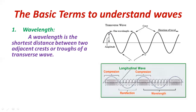The lowest position from the mean or resting position is called the trough. The highest position is the crest and the lowest position is the trough. The distance between two adjacent crests, or two adjacent troughs, is called wavelength.